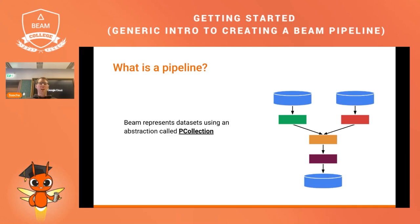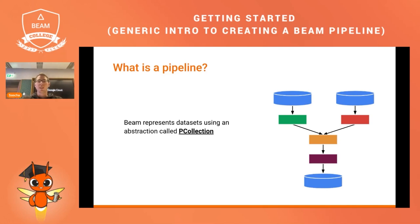When it comes to the portability aspect and running on multiple runners, each runner knows how to deal with a PCollection whenever a Beam pipeline is submitted. So there is no need to change the data structure if you decide to move from one runner to another.